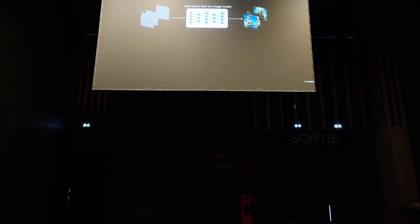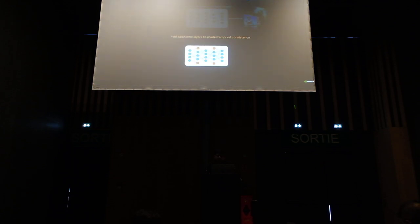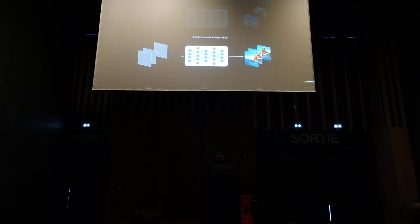The idea is, let's say you have a pre-trained text-to-image model. If you give a noise map and do sampling, you get a bunch of images, but these images won't have any correlation. So the idea is to start with this model, add some additional layers — these additional layers are the ones we use to model temporal consistency — and after adding these layers, we want to fine-tune it on the video data. The hope is that after this fine-tuning, the model will learn temporal consistency and you will get a good video.